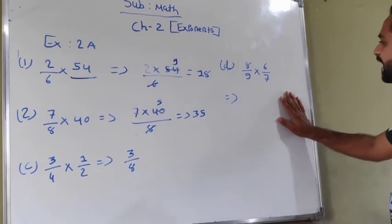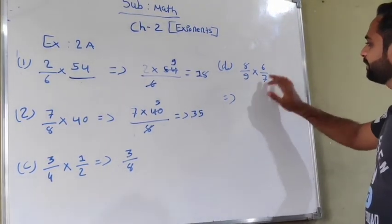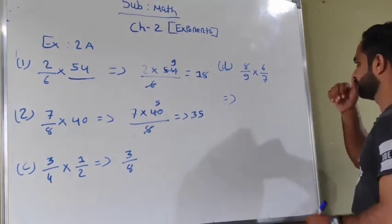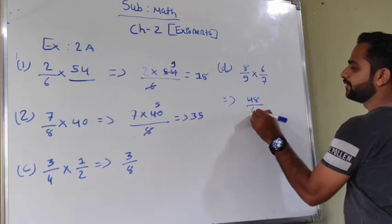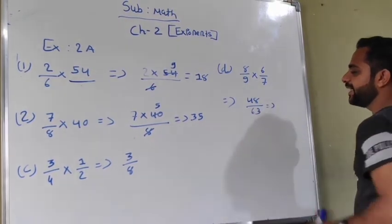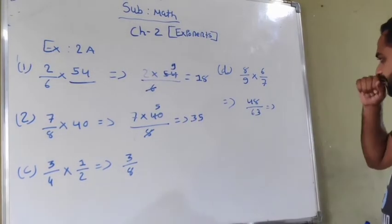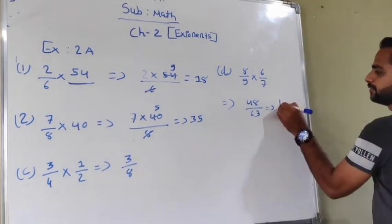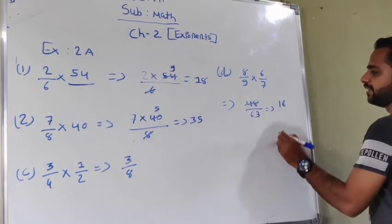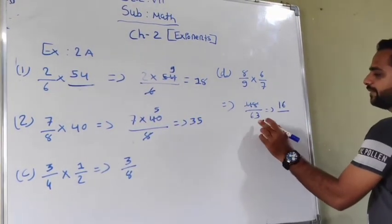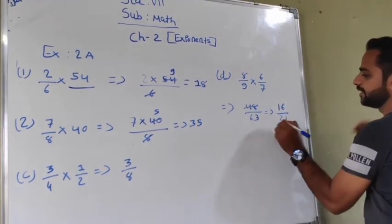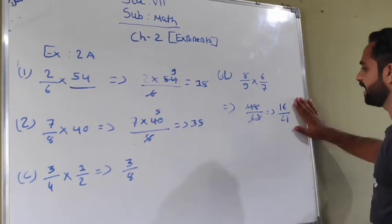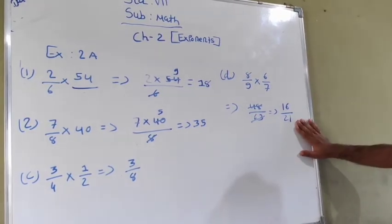Next one is 8 upon 9 multiply by 6 upon 7. 8 times 6 is 48, 9 times 7 is 63. Simplifying both in the same table, the answer will be 16 upon 21.